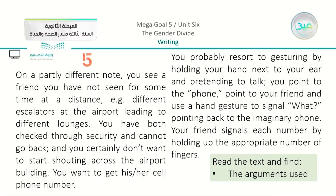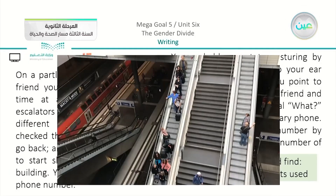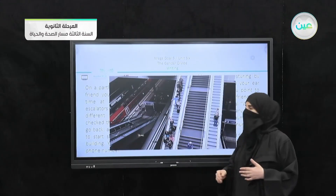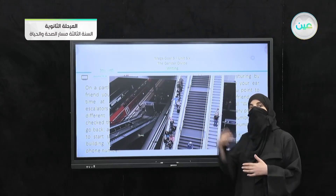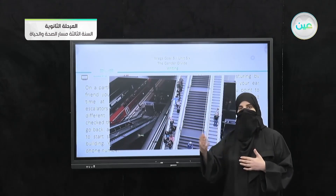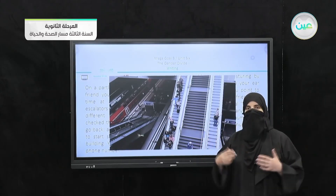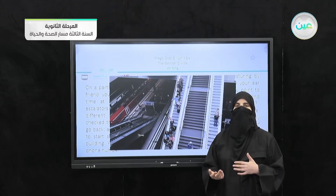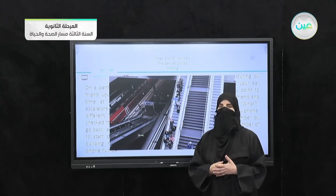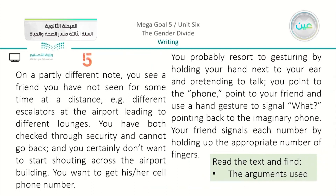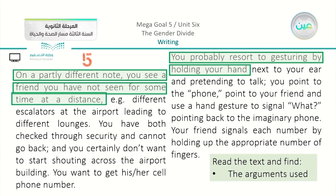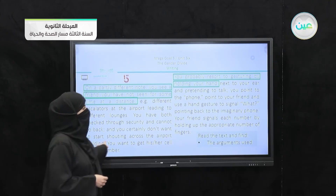The argument in paragraph four is: 'However, there are situations where a different type of interaction is required.' So we agree that sometimes situations require a different kind of interaction. In paragraph five, imagine yourself in an airport on an escalator, and you spot someone you know on the other side. Would you shout in a noisy place, or would you try to use another way to communicate? You would probably resort to gesturing, holding your hand as if you are calling someone on the phone. That is the argument in paragraph five.